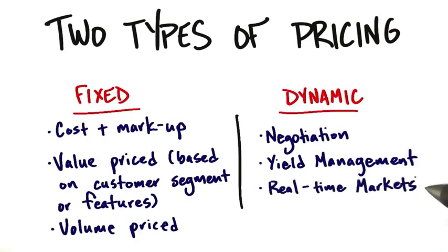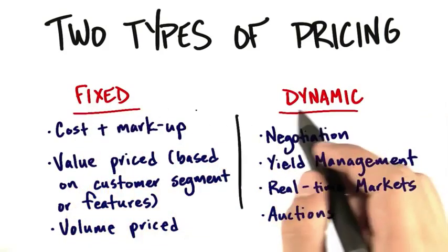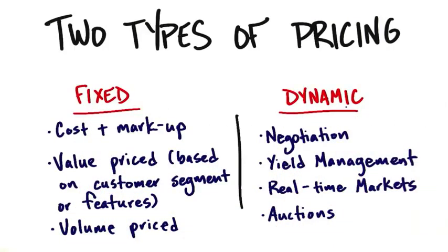Another type of dynamic pricing is real-time markets — the stock market is a real-time market. And auctions like eBay are another example of dynamic pricing. So there are two types of pricing models: fixed and dynamic. How do you know which one to use? You've been out talking to customers — how do they currently buy? What's the revenue stream associated with these pricing tactics? You need to be constantly thinking: what's the right revenue stream for the right segment, and within that, what's the right pricing model — fixed or dynamic?